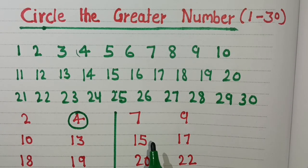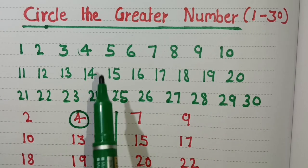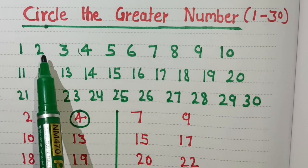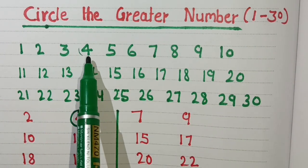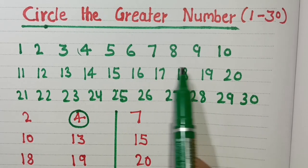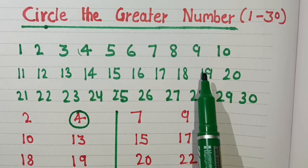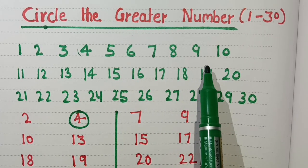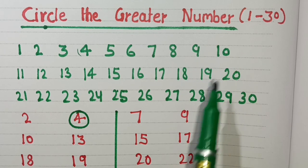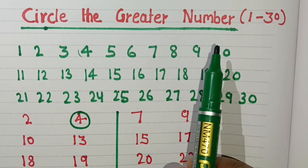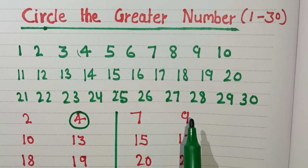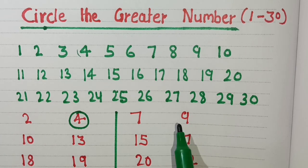Next: 1, 2, 3, 4, 5, 6, 7, 8, 9. So 9 is the greater number. We will circle number 9.